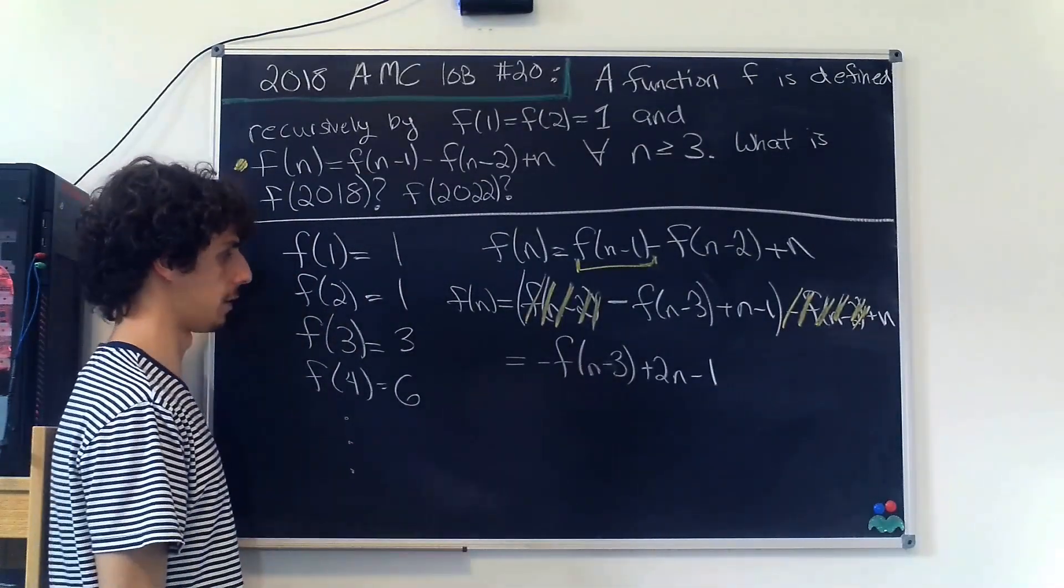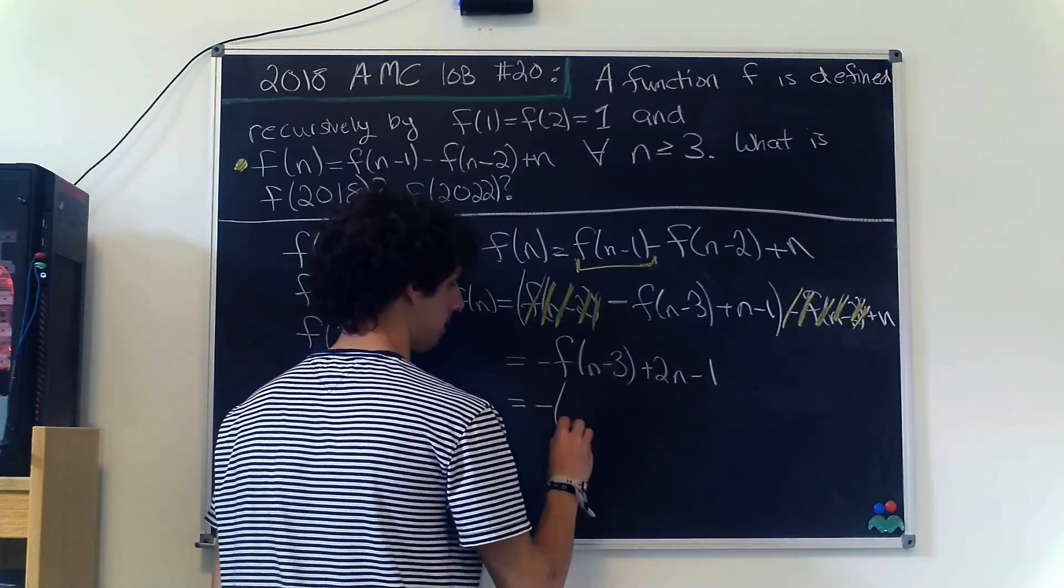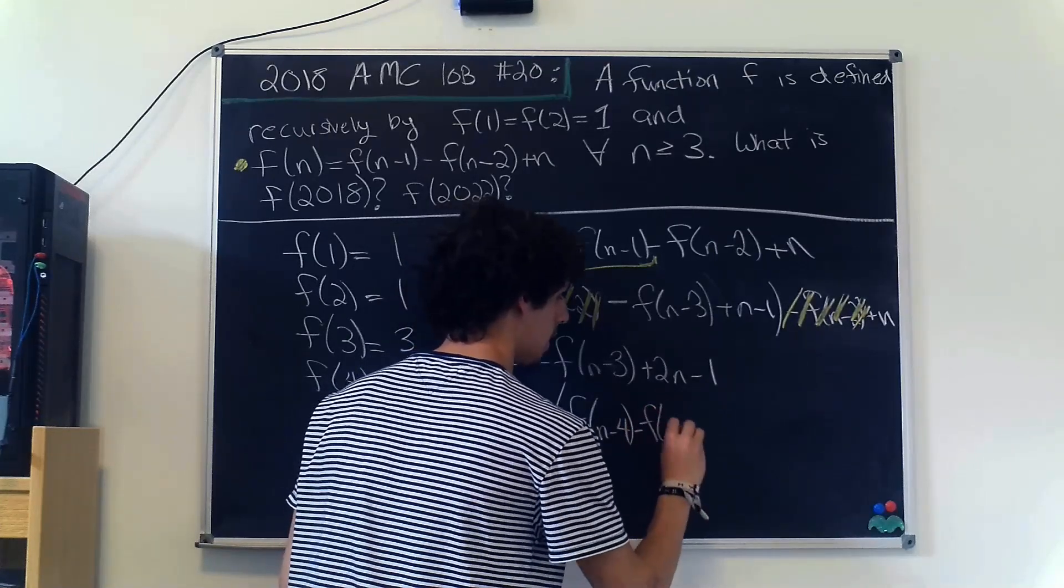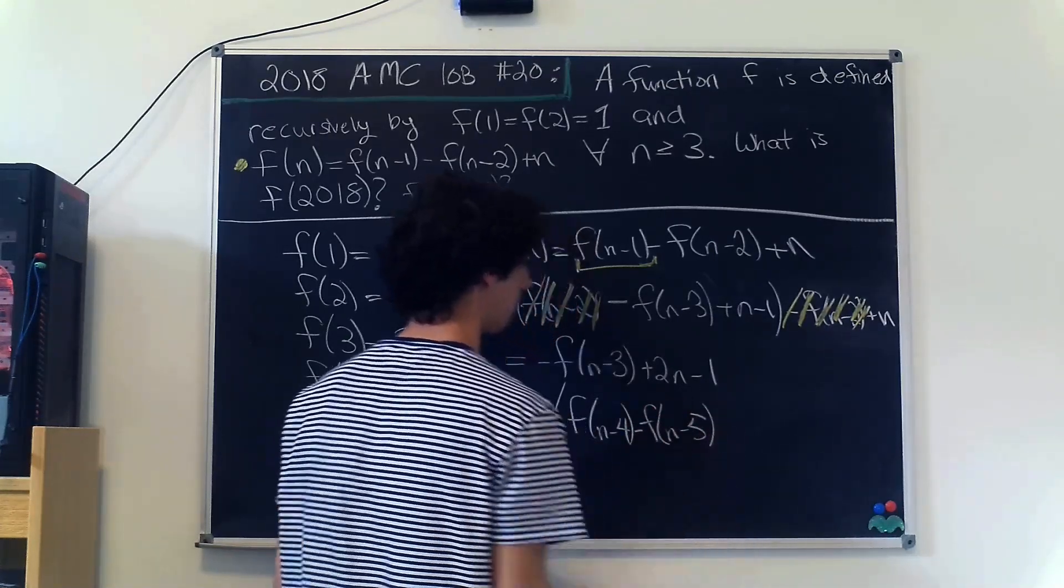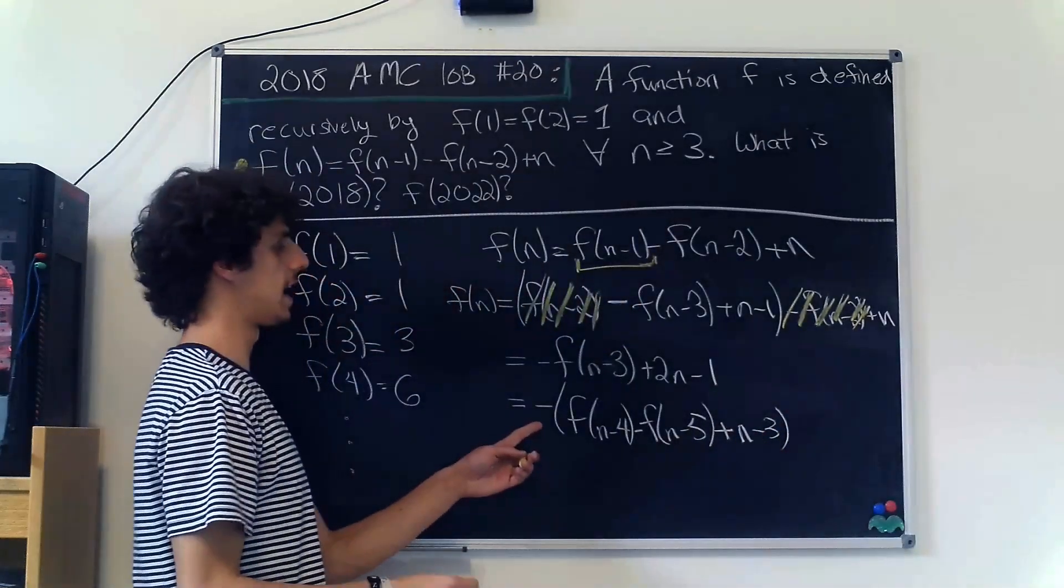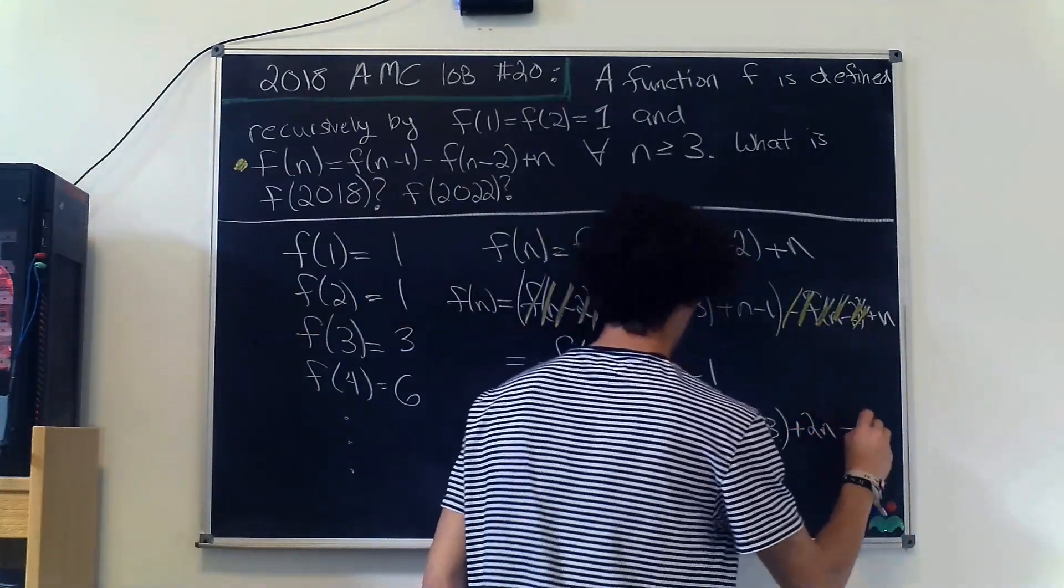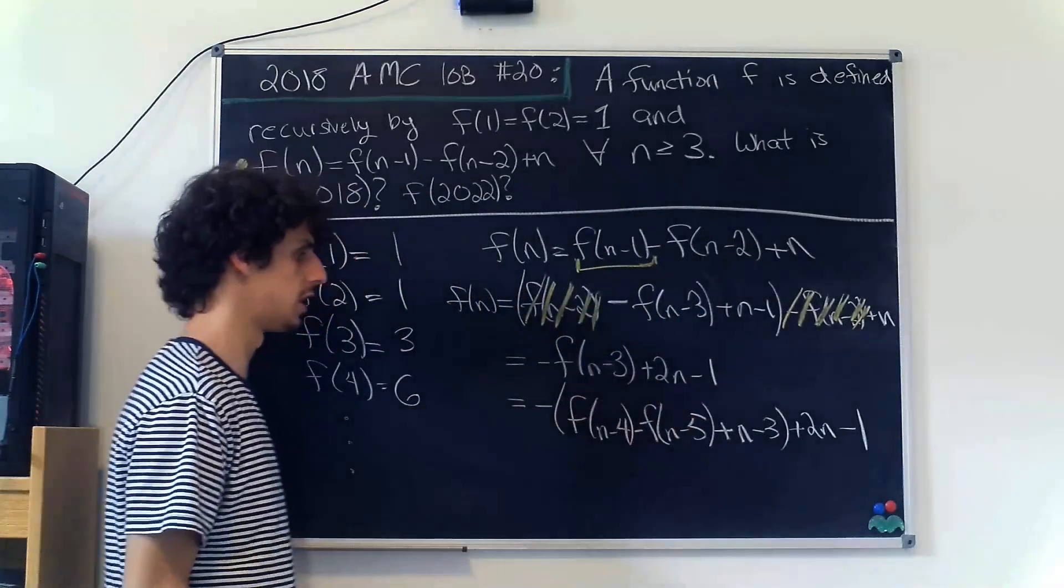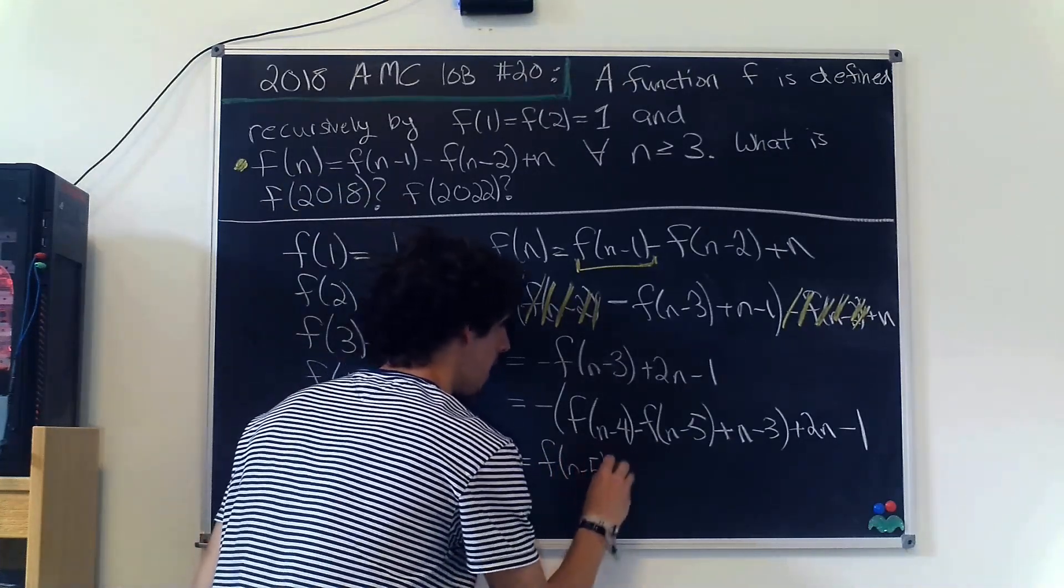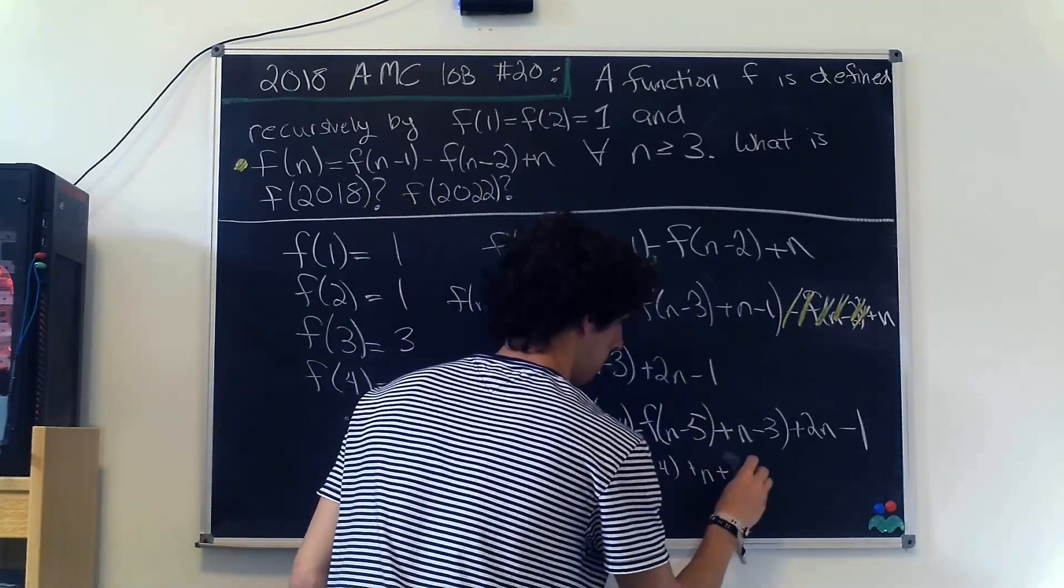But now let's expand this out a little bit. We get negative f(n-4) minus f(n-5) plus n-3, and this is all attached to this negative sign out front. But then we still have this plus 2n minus 1 that's from these two terms over here. But now that gives us f(n-5) minus f(n-4) plus n plus 2.